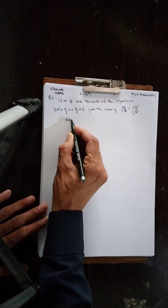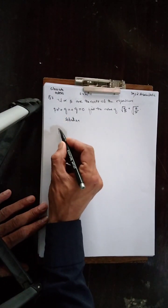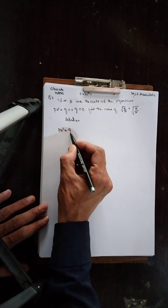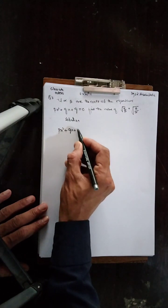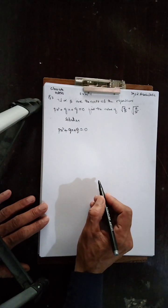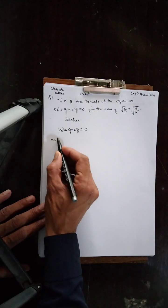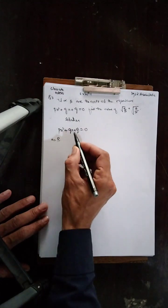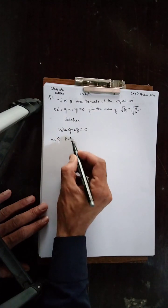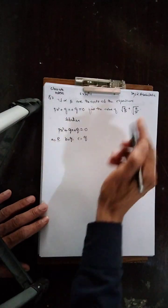Solution: سب سے پہلے given equation کو لکھیں گے: px² + qx + q = 0۔ اس کے بعد a, b, c کی values بنائیں گے — x² کی side والا number a کی value، x کی side میں جو ہے وہ b کی value، اور without x والا c کی value۔